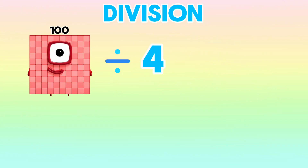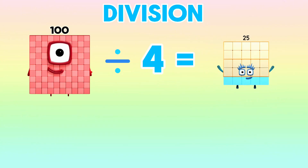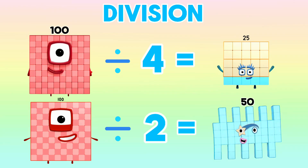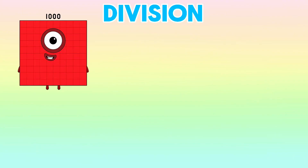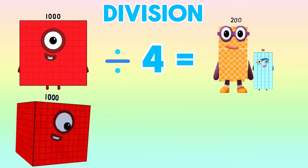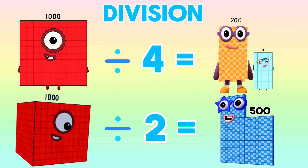100 divided by 4 is equals to 25. 100 divided by 2 is equals to 50. 1,000 divided by 4 is equals to 250, while 1,000 divided by 2 is equals to 500.